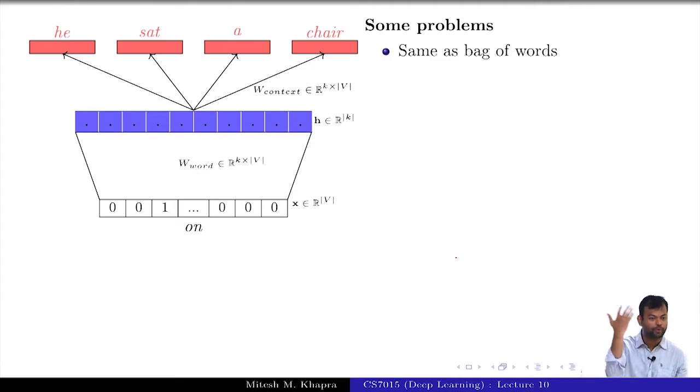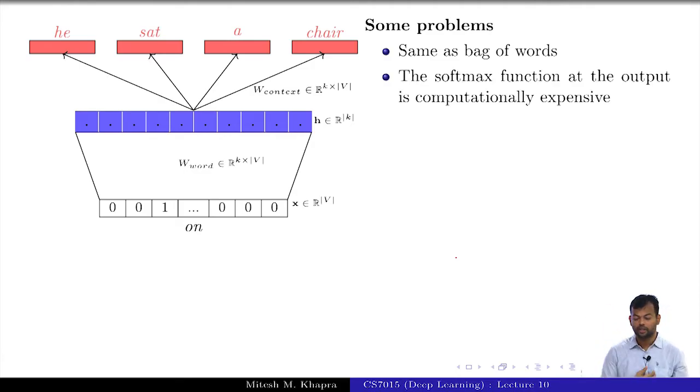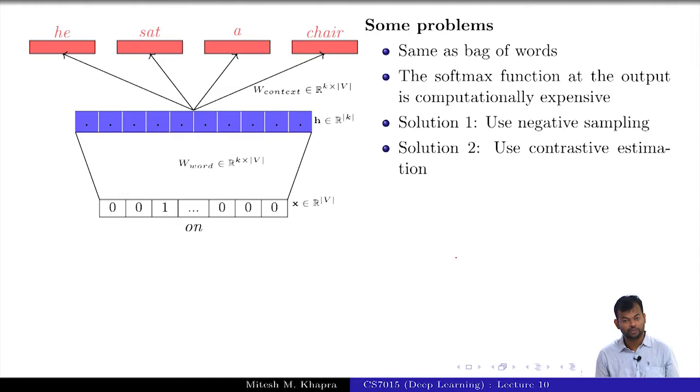Now you are doing these four expensive computations at the end. The softmax computation is expensive. There are three different solutions, three different ways that we can deal with it. One is something known as use negative sampling, the other is to use contrastive estimation, and the third is to use a hierarchical softmax. We are going to see all of these, and I will shamelessly continue for a few more minutes.